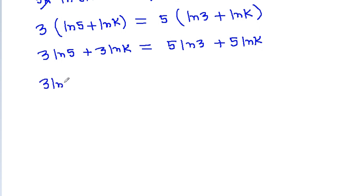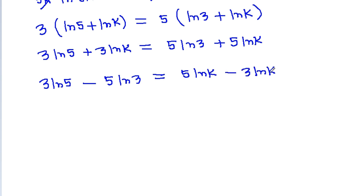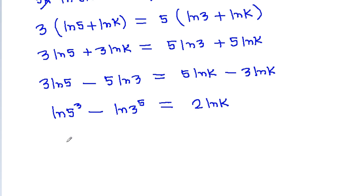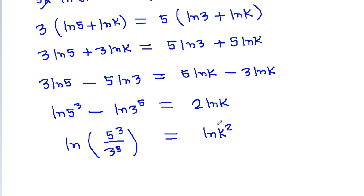Rearranging: 3·ln(5) minus 5·ln(3) equals 5·ln(k) minus 3·ln(k), which simplifies to ln(5³/3⁵) equals ln(k²). Therefore k² is equal to 5³ divided by 3⁵.